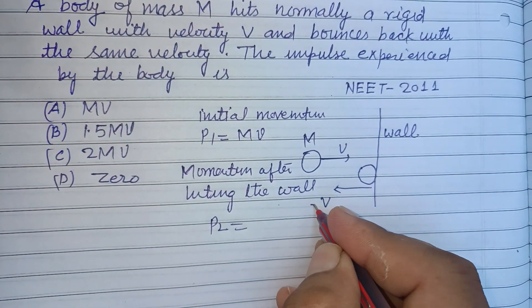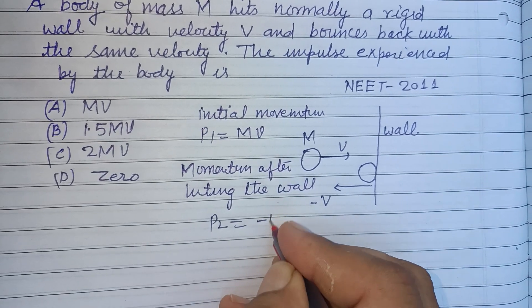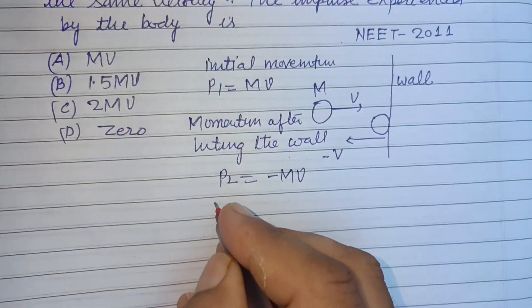That is P2. Since velocity becomes reversed, so this is minus MV. Change in momentum...